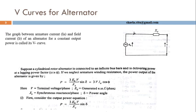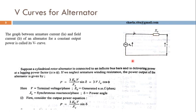Now we will see the behavior of a synchronous generator when it is in parallel. Here we are considering a cylindrical rotor alternator, that means a non-salient pole rotor alternator. The per phase equivalent circuit is drawn. E0 is the induced voltage — that means, per phase induced voltage at no load condition. Xs is our synchronous reactance, and V is the per phase terminal voltage.